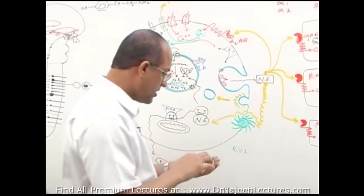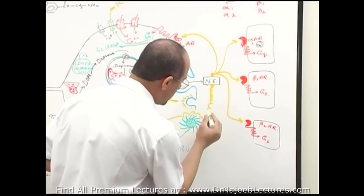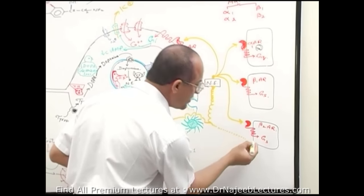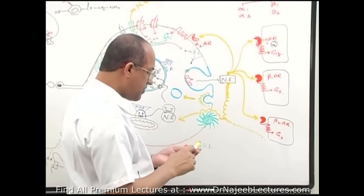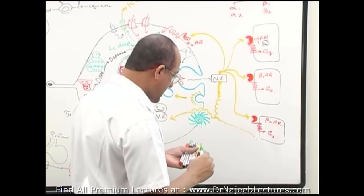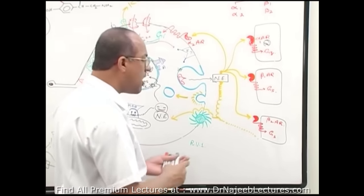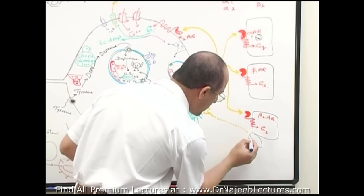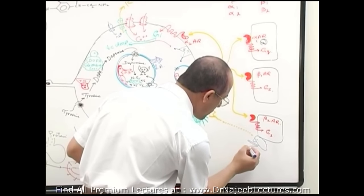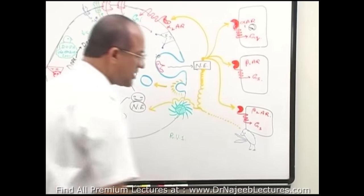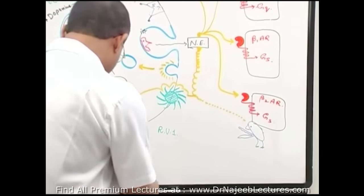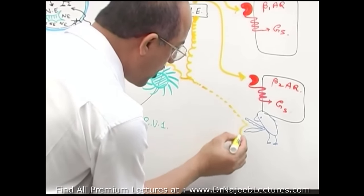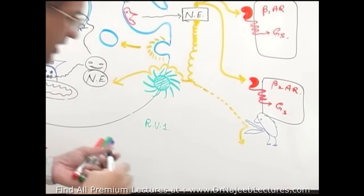So termination of adrenergic activity occurs primarily by Reuptake-1; a small portion is destroyed by MAO within the nerve ending; another portion is degraded by COMT on the effector tissue; and a tiny fraction diffuses into circulation for hepatic/renal catabolism. There are two key catecholamine-degrading enzymes: monoamine oxidase (MAO) and catechol-O-methyltransferase (COMT).